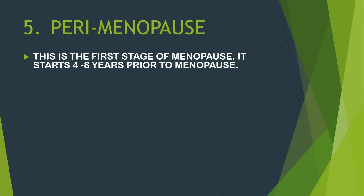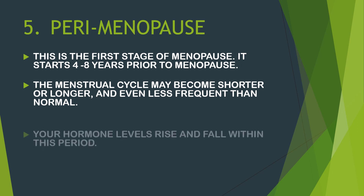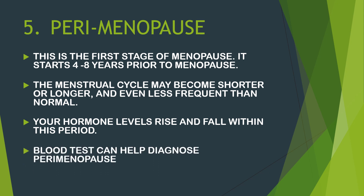Perimenopause is another cause of irregular menstruation. This is the first stage of menopause and starts about four to eight years before a woman reaches menopause. The menstrual cycle here may become shorter, longer, or less frequent than normal. Hormone levels rise and fall during this period, and blood tests can help diagnose perimenopause.